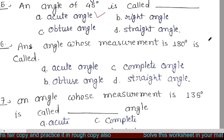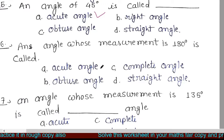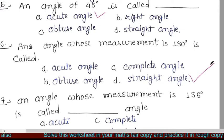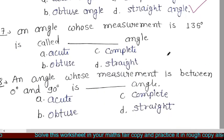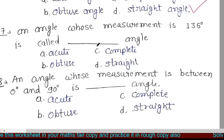An angle whose measurement is 180 degrees — ऐसा angle जिसका measurement 180 degree होता है वह acute, complete, obtuse, या straight कौन सा angle होता है? It is straight angle.